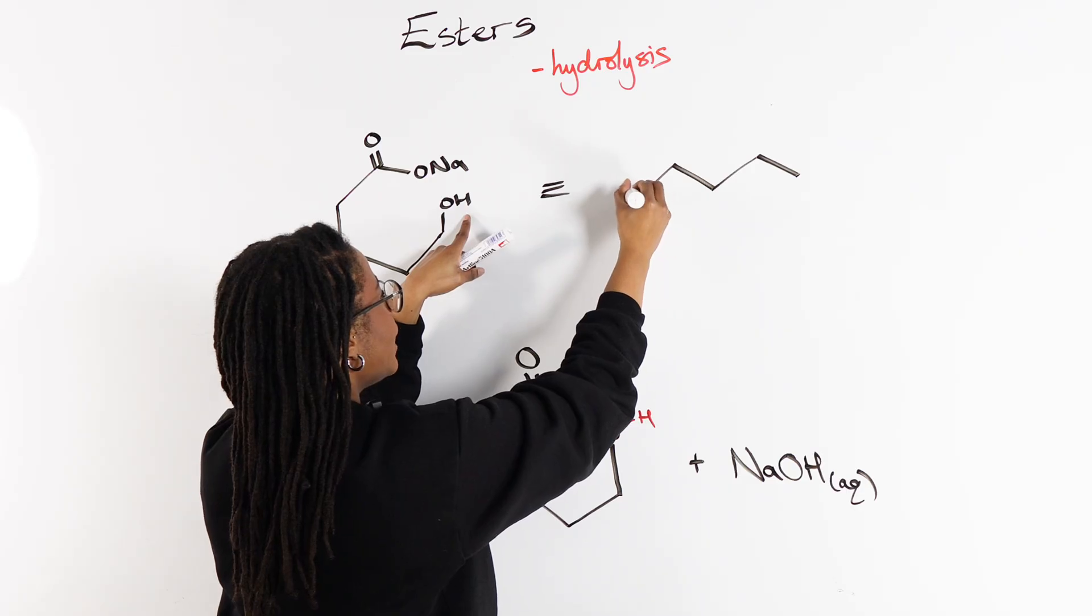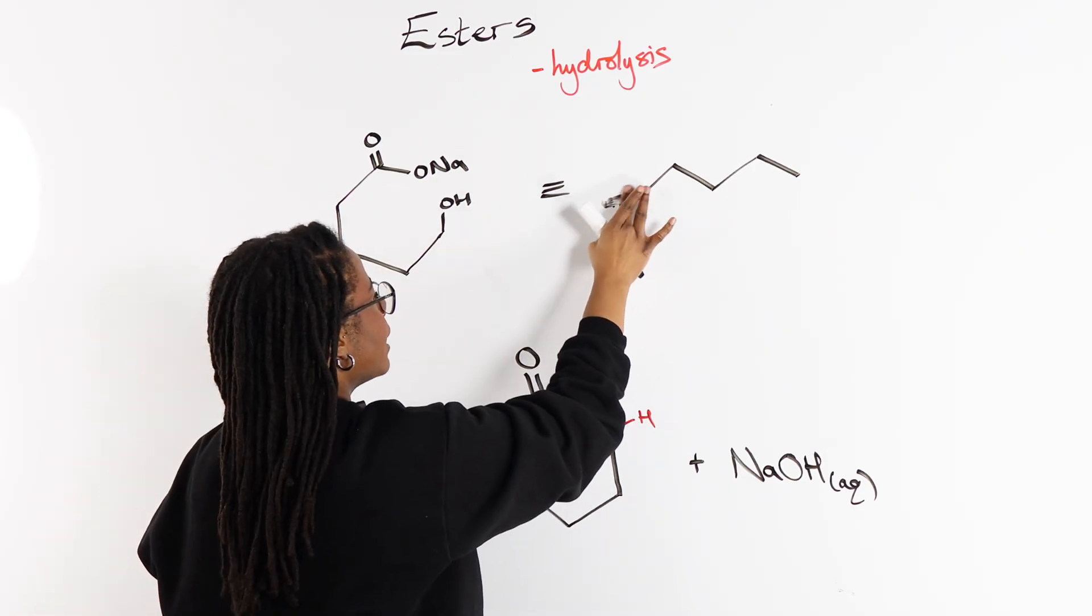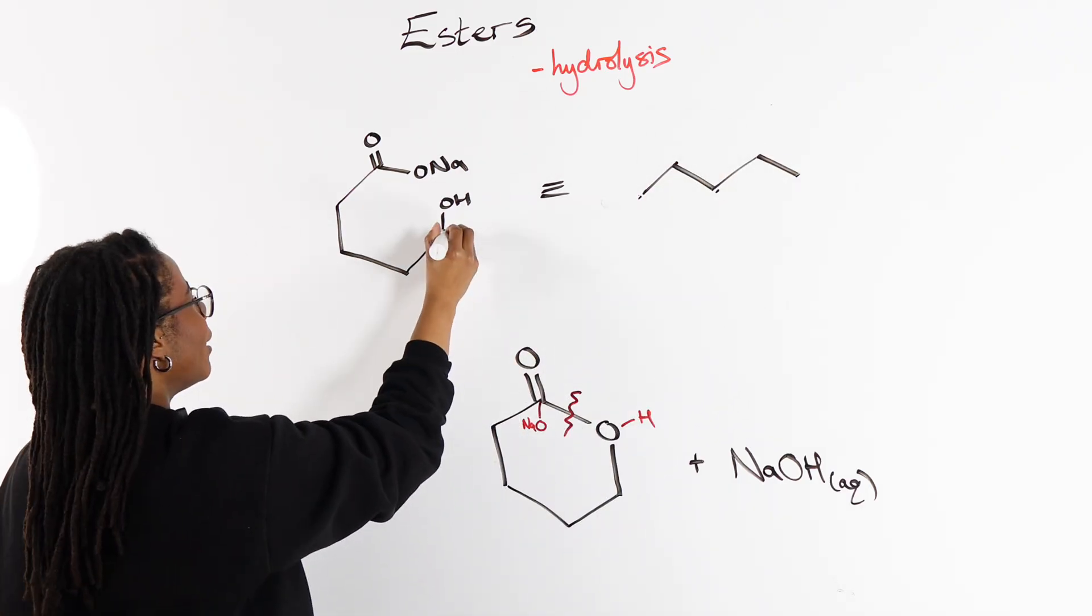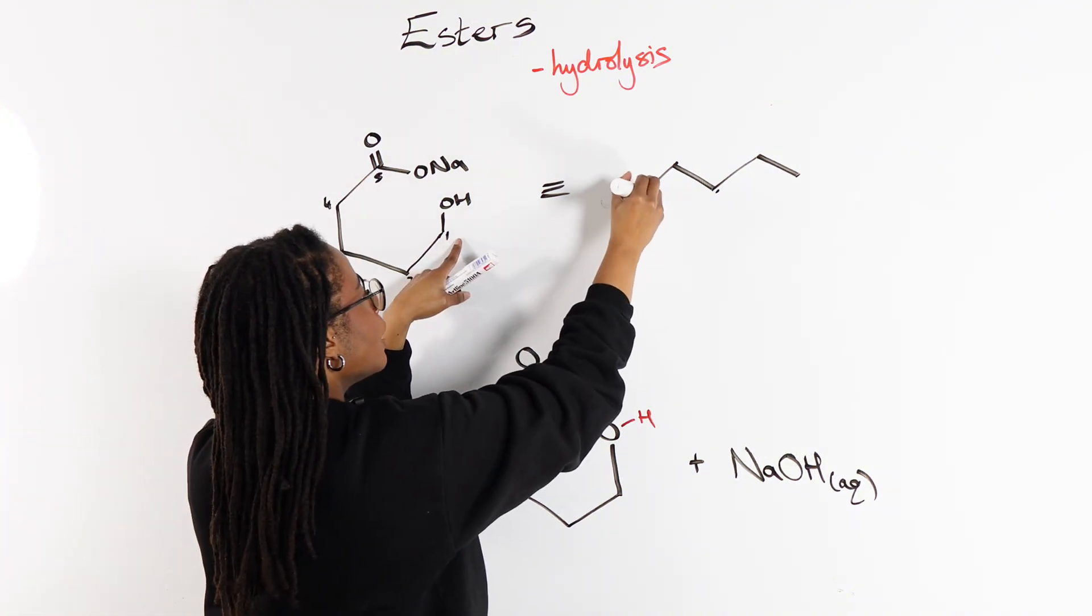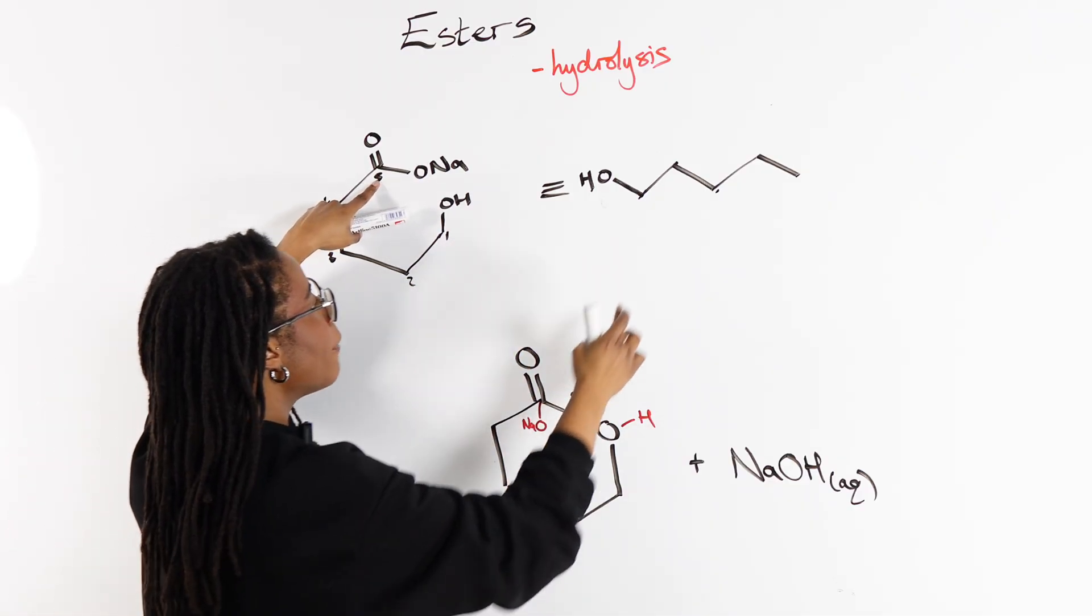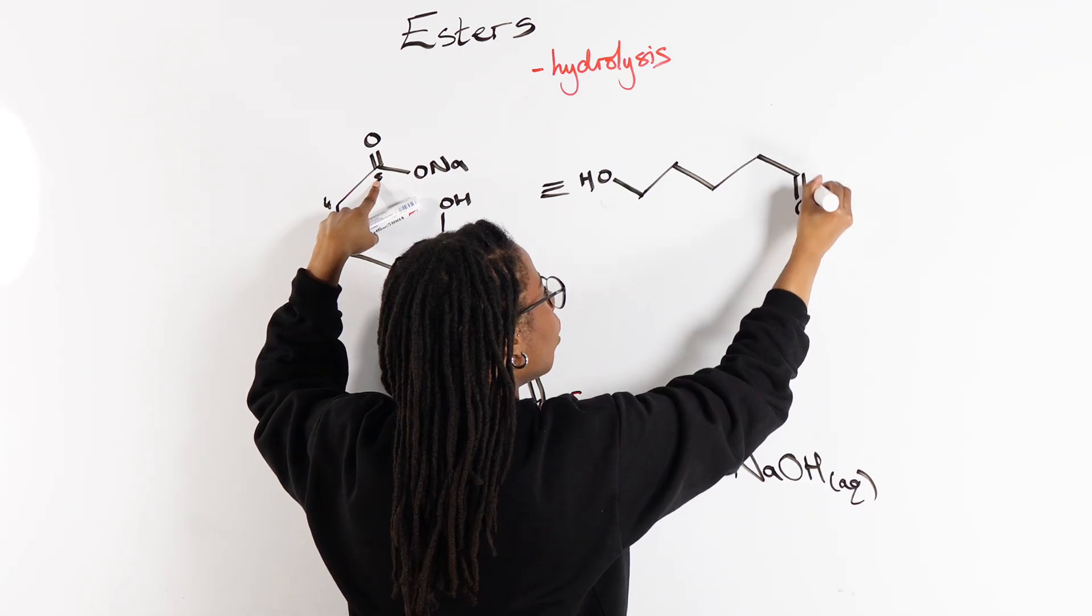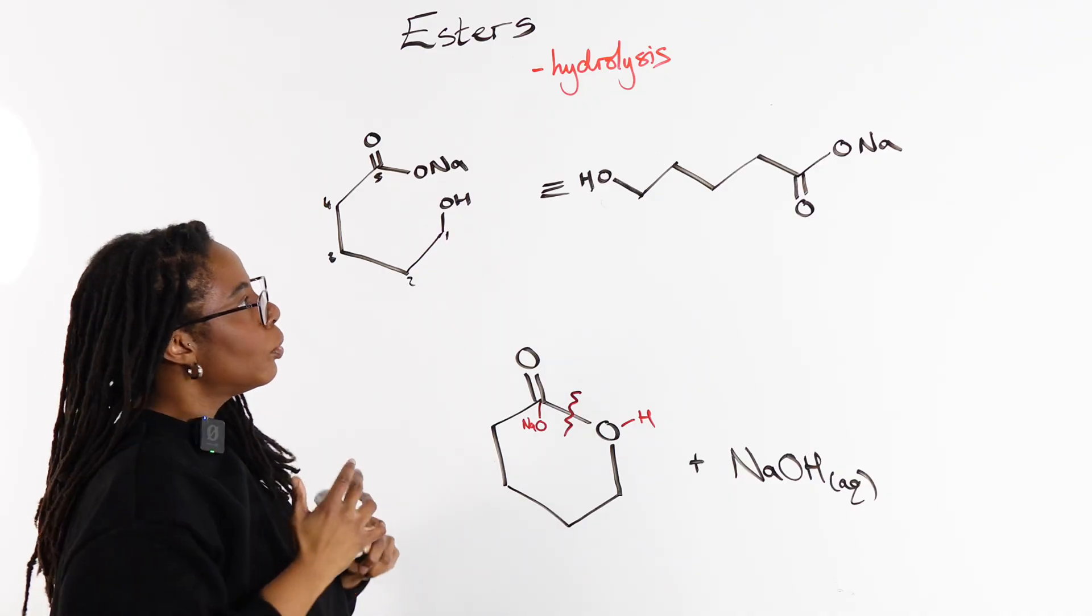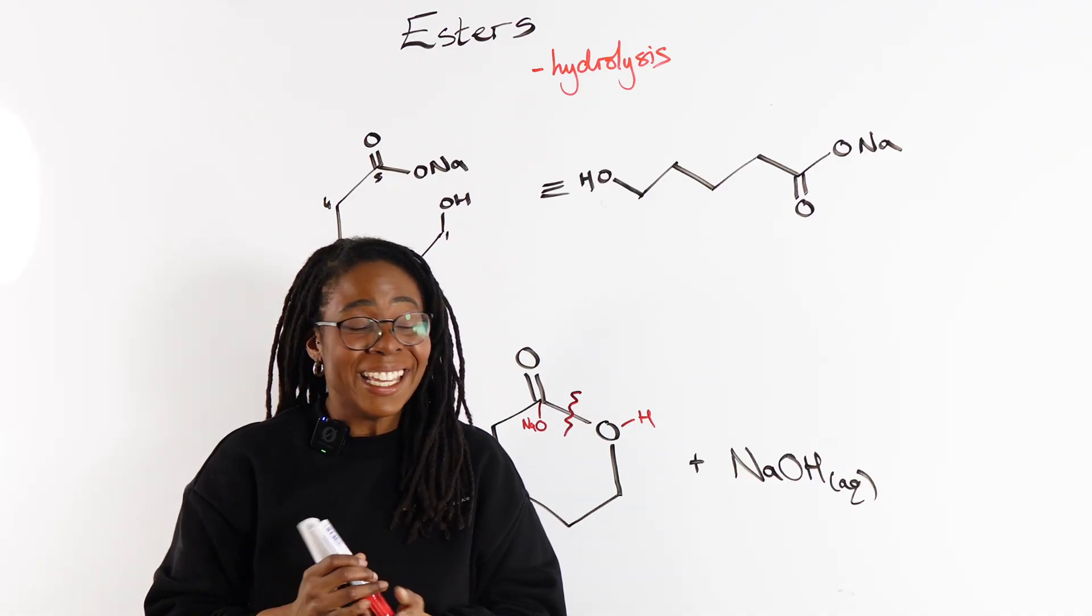Now on one end we're going to have the OH, and then on the other end—oh, hang on, I need to add another carbon. Okay, one, two, three, four, five carbons. So on carbon number one, that's going to be attached to our OH, and then carbon number five is going to have our ONa.